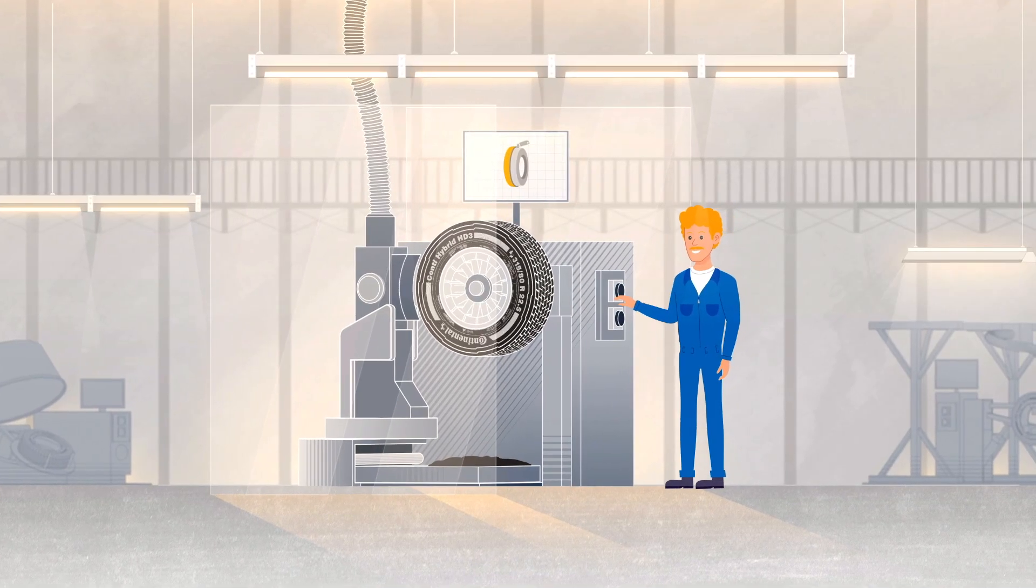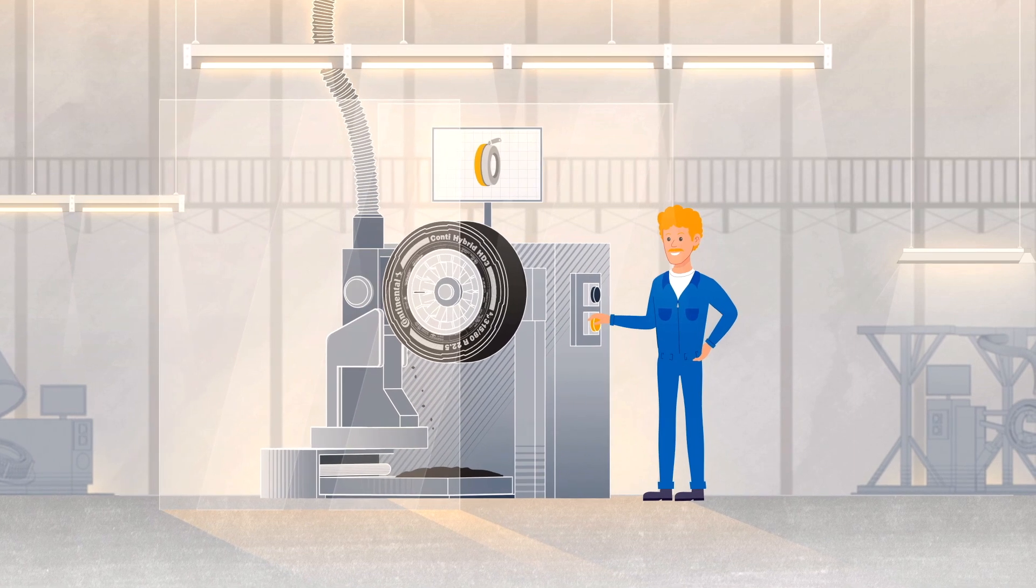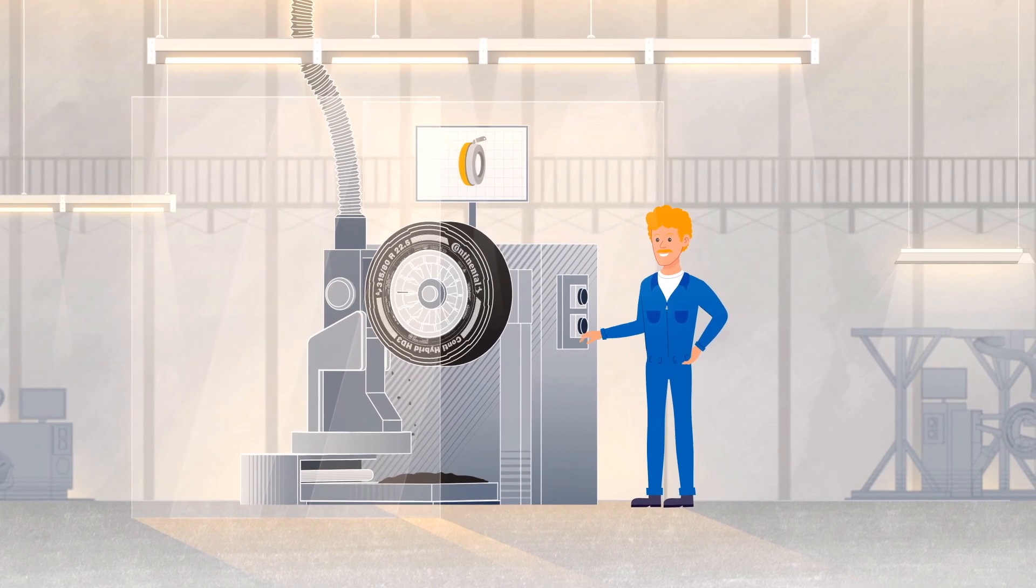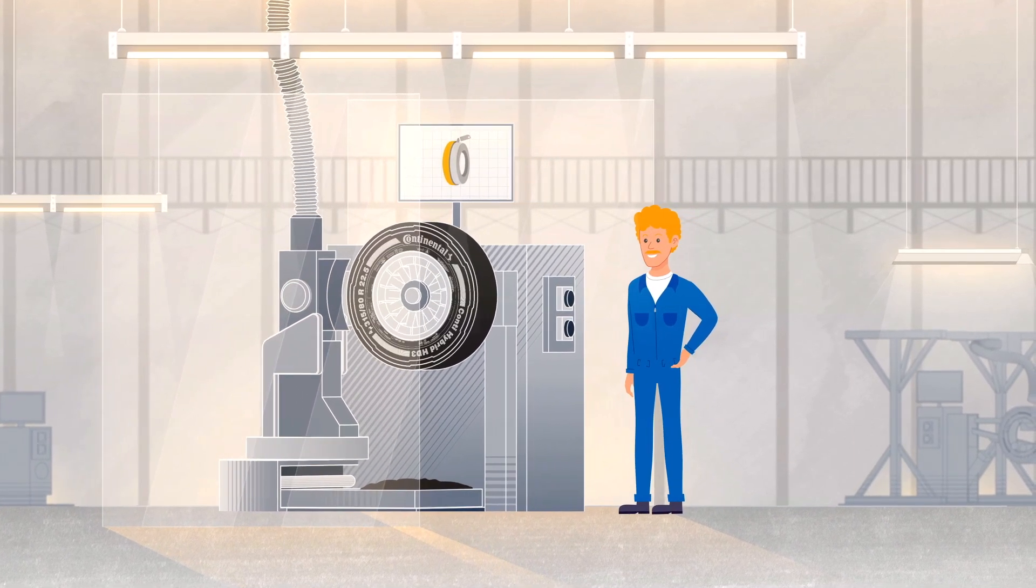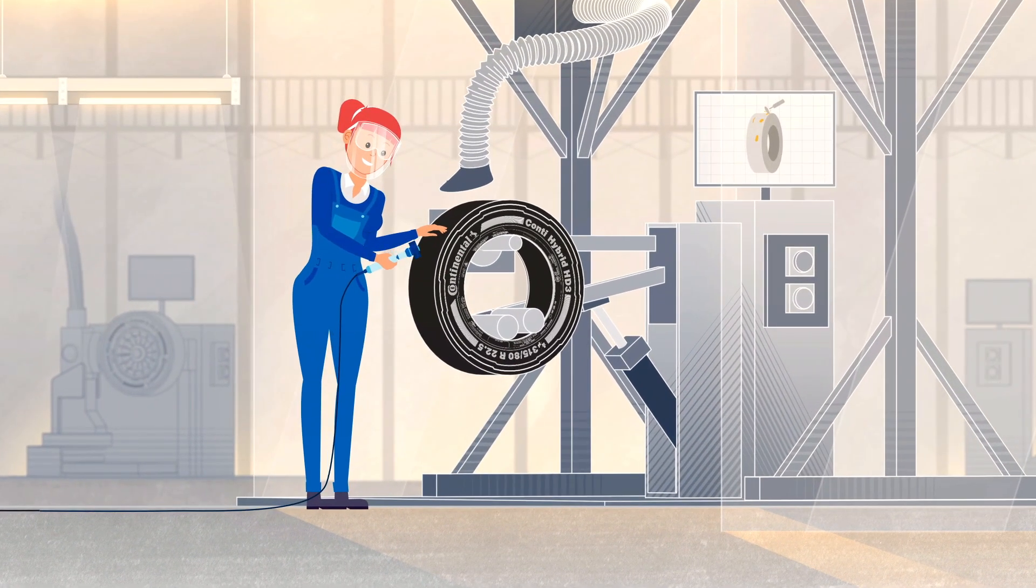The casing is then buffed to the correct crown width, radius and circumference to achieve a perfect match for the size and type of the new tread to be applied. Any damaged or residual material is removed to prepare the casing for repair if necessary.